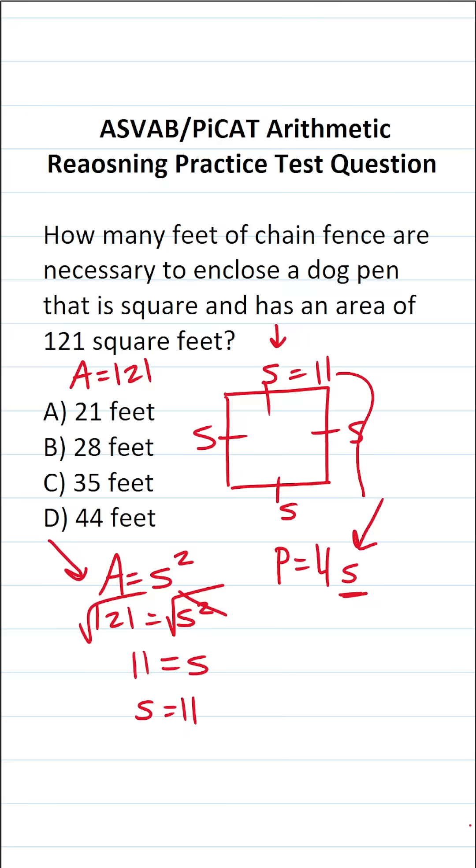And I can go ahead and plug that in for S in the perimeter formula. This becomes perimeter equals 4 times 11. 4 times 11 is 44. So in other words, you would need 44 feet of chain fence to enclose this square dog pen that has an area of 121 square feet.